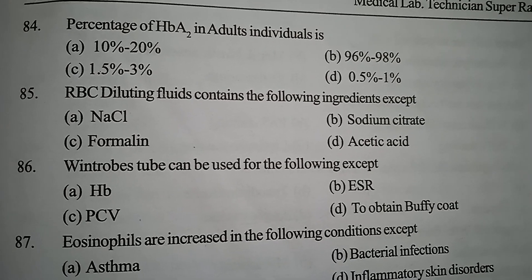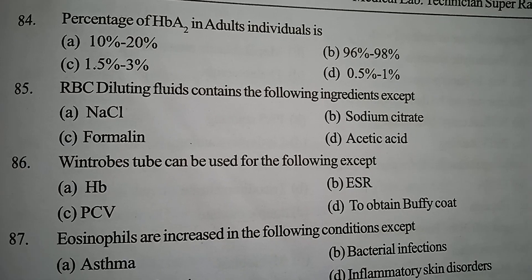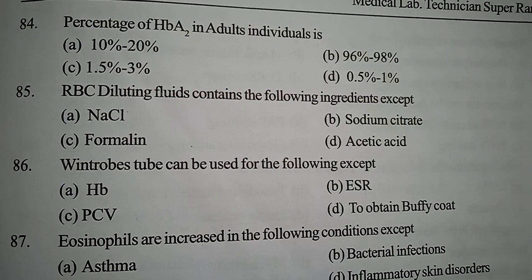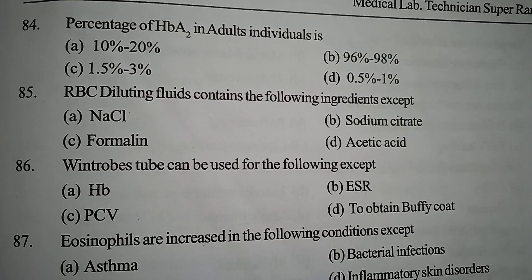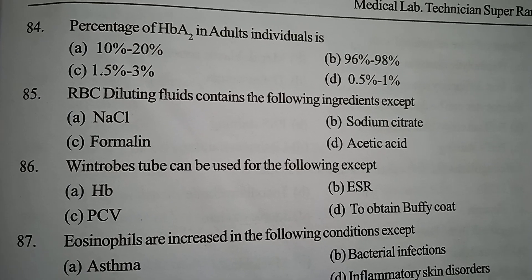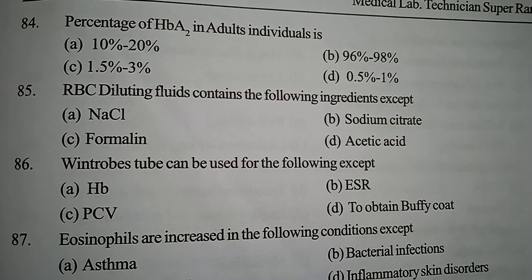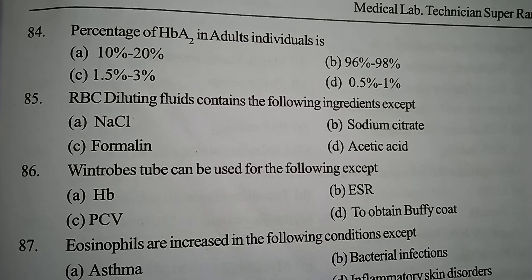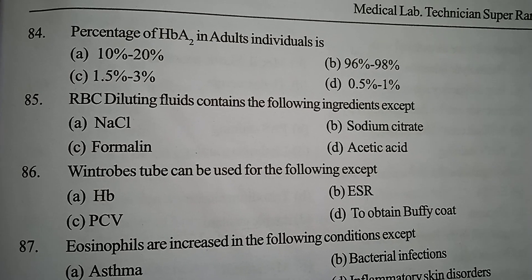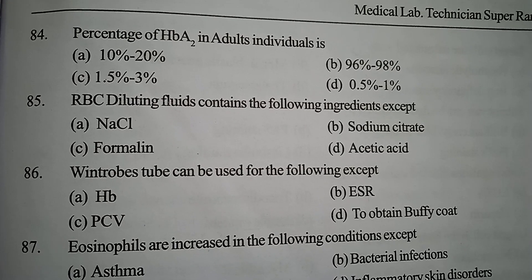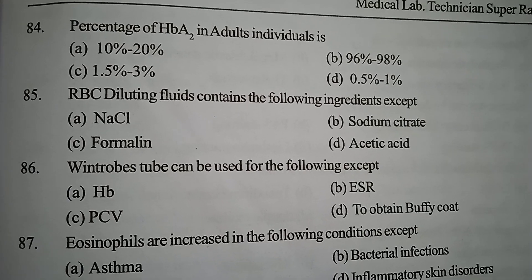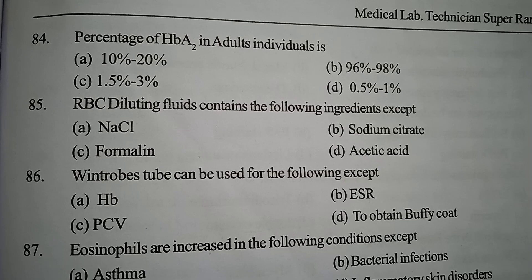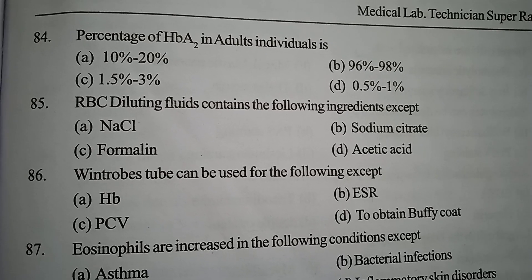Next one: RBC diluting fluid contains the following ingredients except — Option A: sodium chloride. Option B: sodium citrate. Option C: formalin. Option D: acetic acid. Correct answer: Option D, acetic acid, which is not in RBC diluting fluid.